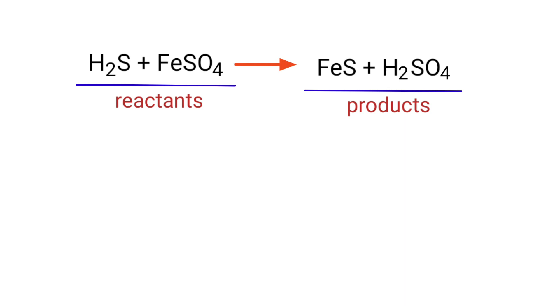In this equation, the reactants are hydrogen sulfide and ferrous sulfate, and the products are iron sulfide and sulfuric acid.